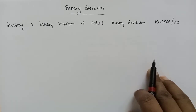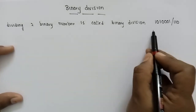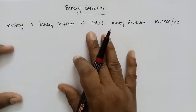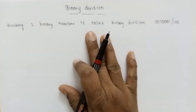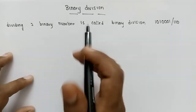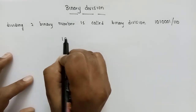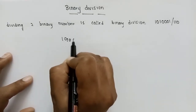So we go through normal division. We have a binary number: 1 0 1 0 0.